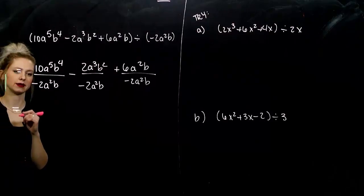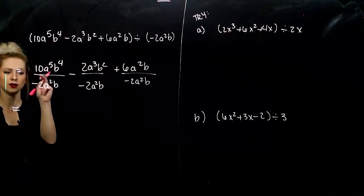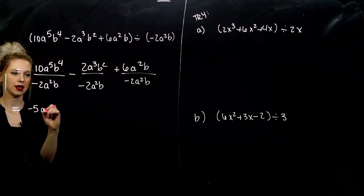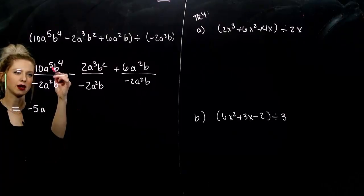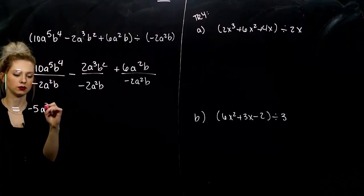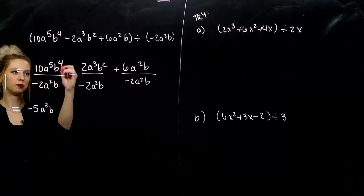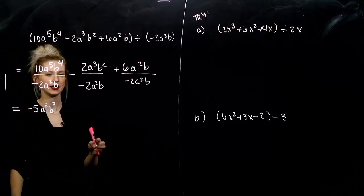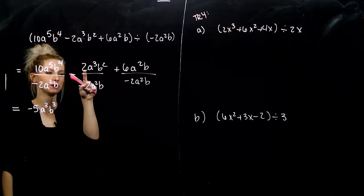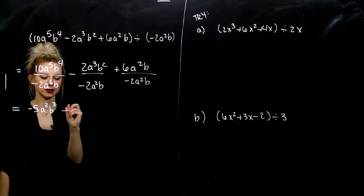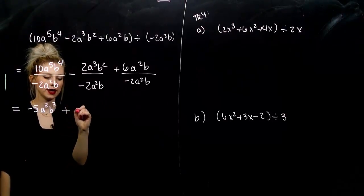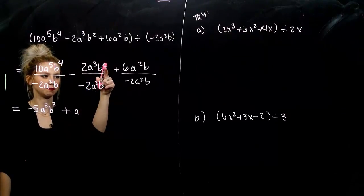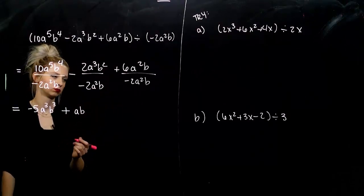So, my first term, how is it going to simplify? 10 divided by negative 2 will give me negative 5 on the front. How many a's? How many b's? So, for a, I've got 5 taking away 2. I'll be left with 3. And for b, I have 4 up top and I'm taking away 1. I'll be left with 3. Second term, negative 2 divided by negative 2 will give me a positive 1. We don't need to write the 1. How many a's? 3 minus 2? 1. How many b's? 2 minus 1? 1. That was easy.